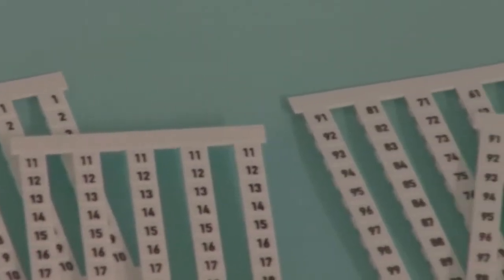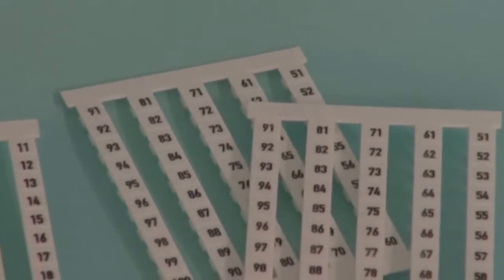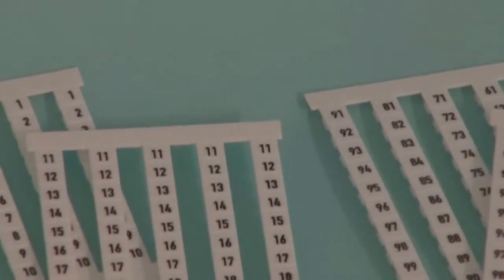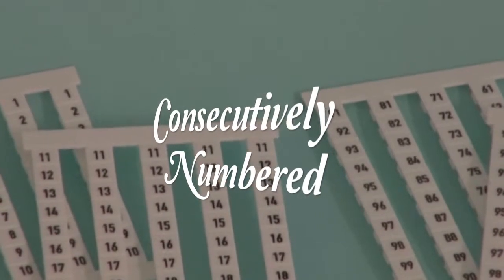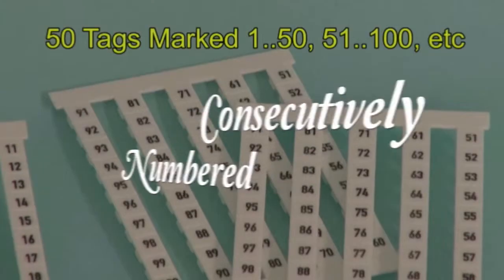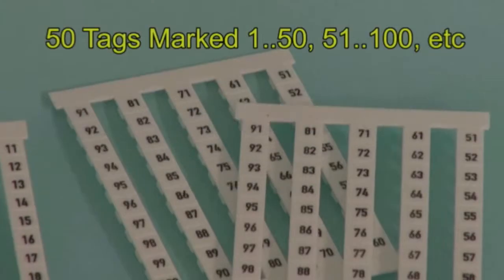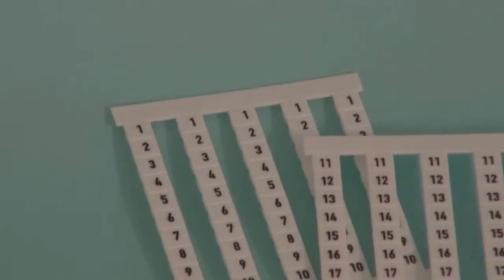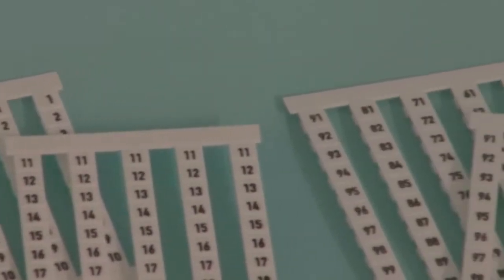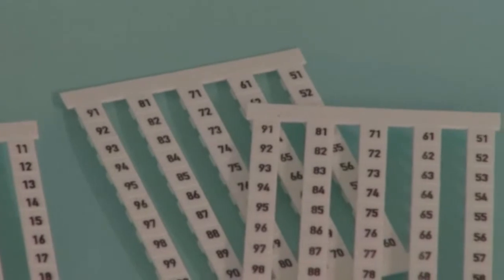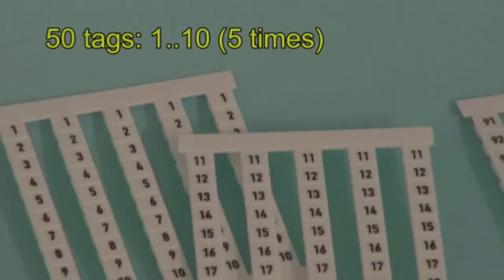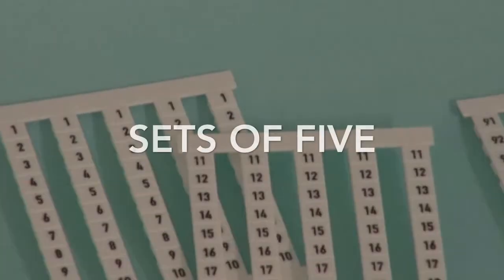The two most common configurations for the DEK marking tags are: 1. A card of 50 consecutive numbers, for example 1-50, 51-100, etc. Or 2. A card containing 5 strips of 10 consecutive numbers, for example 5 strips of 1-10, or 5 strips of 11-20, etc.